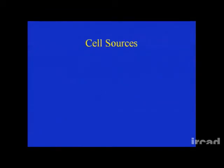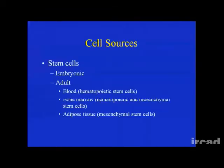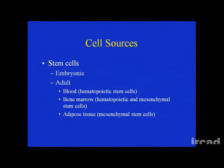For cell sources to grow tissue, these include stem cells — both embryonic stem cells and adult stem cells. The stem cells in blood are typically hematopoietic stem cells. In bone marrow, you have hematopoietic and also mesenchymal stem cells. And in adipose tissue, your primary source is mesenchymal stem cells.